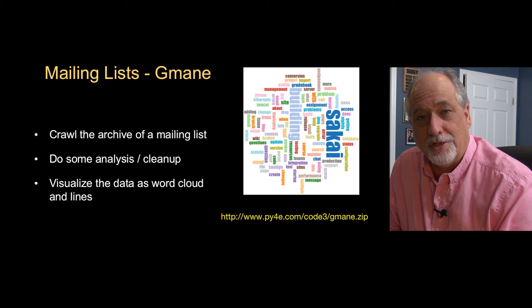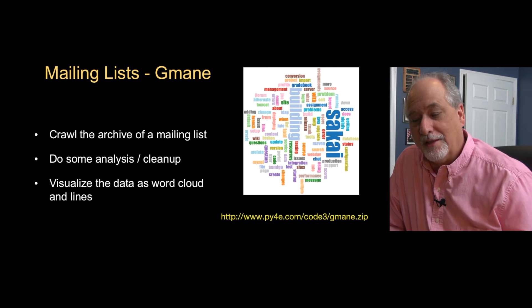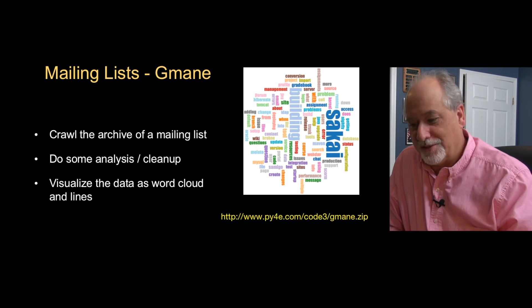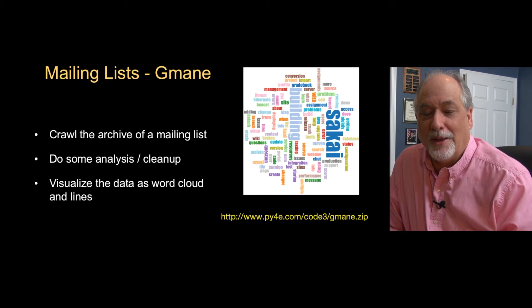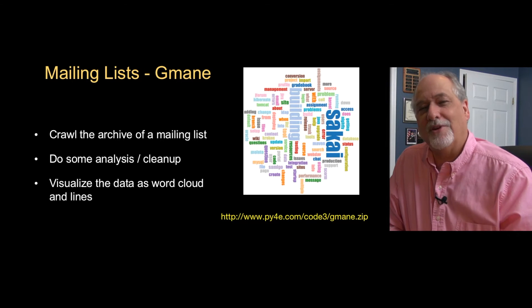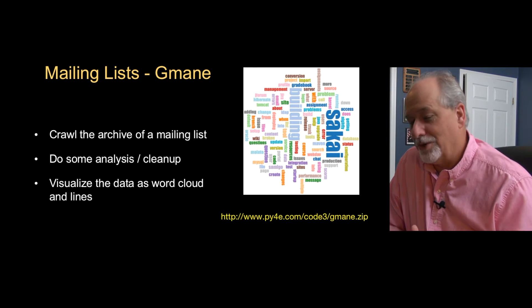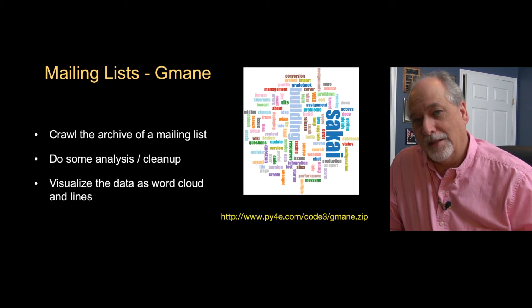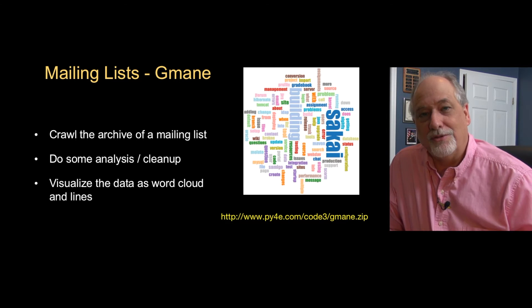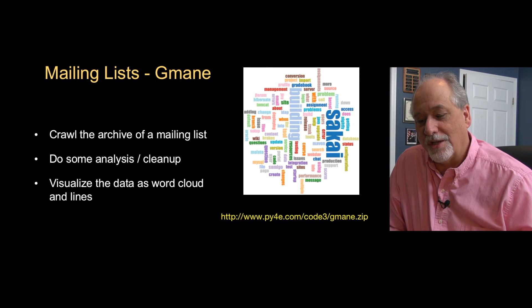The last visualization application we're going to take a look at is mailing lists, which is kind of ironic — we started with the mailing lists and we're going to end with the mailing lists. The mailing lists are from my open source Sakai project, which I love and am very proud of. We're going to crawl the archive of a mailing list and then do two visualizations: one is an activity visualization and another is a word cloud.